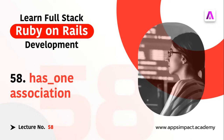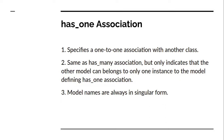Let's first try to understand what has-one association is. Has-one association specifies a one-to-one association with another model. For example, consider a department and a manager — every department has one manager, so we can define it as a one-to-one relationship. Every manager belongs to some department, and every department has only one manager; no department can have two managers.